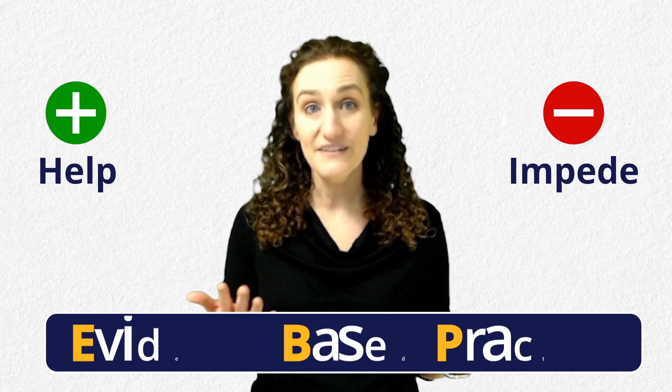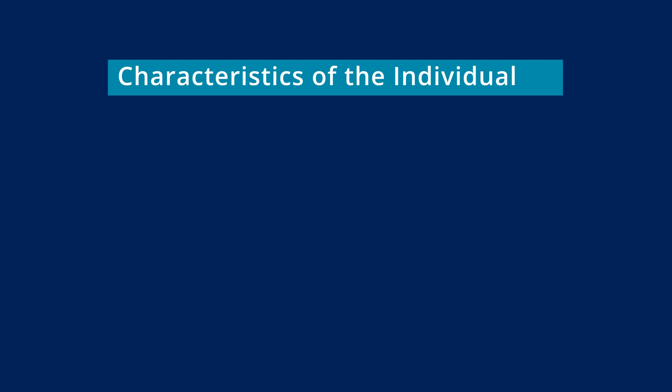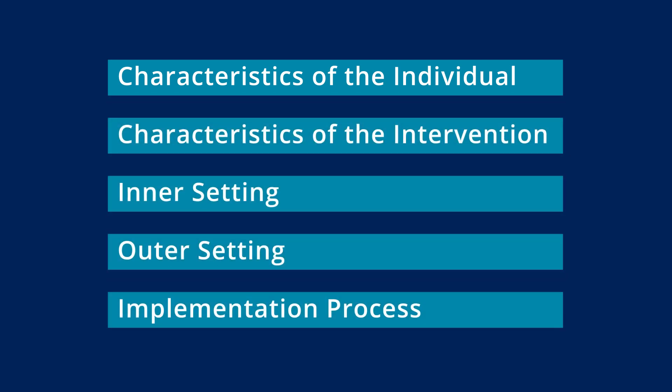Before we get into all that, let's remind everyone about CFIR, its domains, and tell them about the big picture changes. As a refresher, CFIR is a determinants framework — just a fancy way to say it's a big list of factors that can impede or help implementation of an evidence-based practice, also known as an EBP. You can learn about what those key factors are by talking to people who are doing the implementation. CFIR has put all those factors into five domains or categories: characteristics of the individual, characteristics of the intervention, inner setting, outer setting, and implementation process.